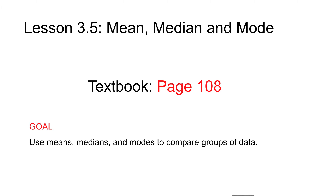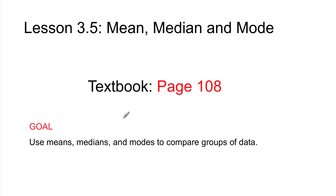Welcome to Lesson 3.5: Mean, Median, and Mode, found in your textbook on page 108. The goal for this lesson is to use means, medians, and modes to compare groups of data. What we're going to be doing today is review, so copy your title, follow along in the textbook, and write down notes.